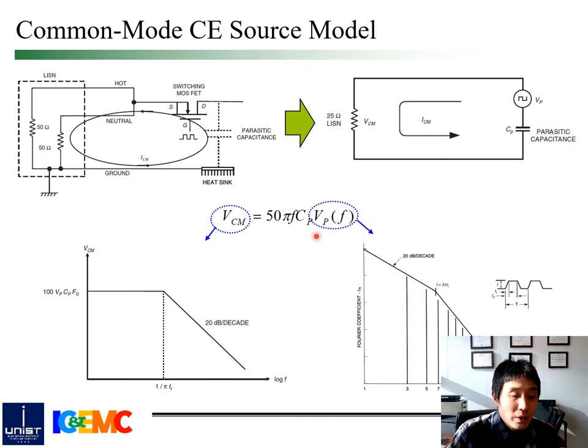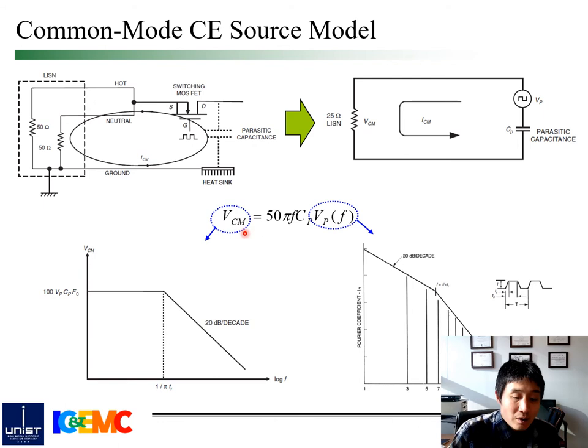From this circuit model, we can estimate the frequency spectra of the common mode CE noise observed at the receiver side. As is well known, the frequency spectra of a trapezoidal periodic voltage waveform decrease by 20 dB per decade until the knee frequency, which is determined by the rise time of this pulse, and decrease by 40 dB per decade above the knee frequency. As a result, the frequency spectra of common mode conducted emission noise become flat until the knee frequency and start to decrease by 20 dB per decade above the knee frequency.